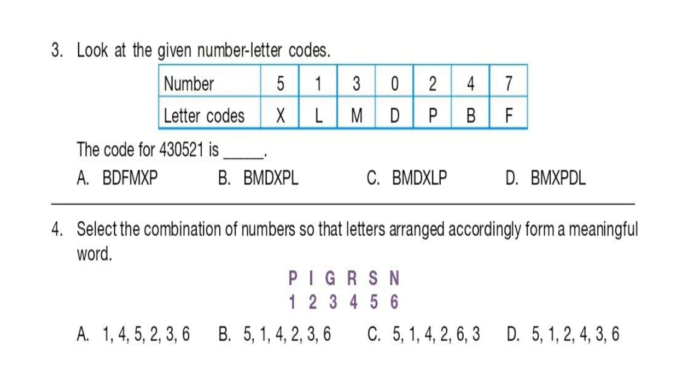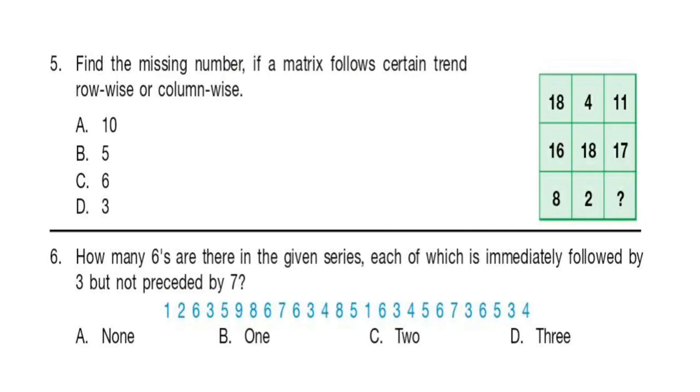Question 4: Select the combination of numbers so that letters arranged accordingly form a meaningful word. Question 5: Find the missing number if a matrix follows certain trend row-wise or column-wise.